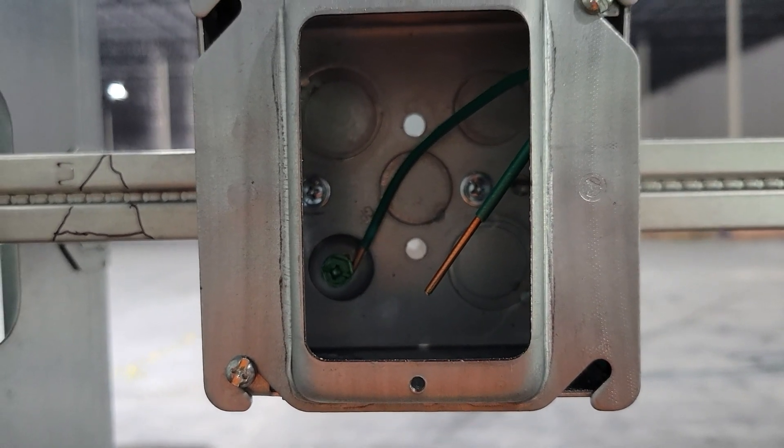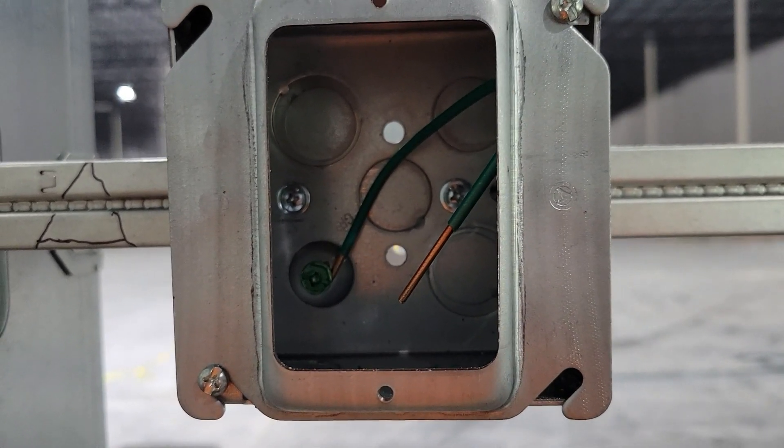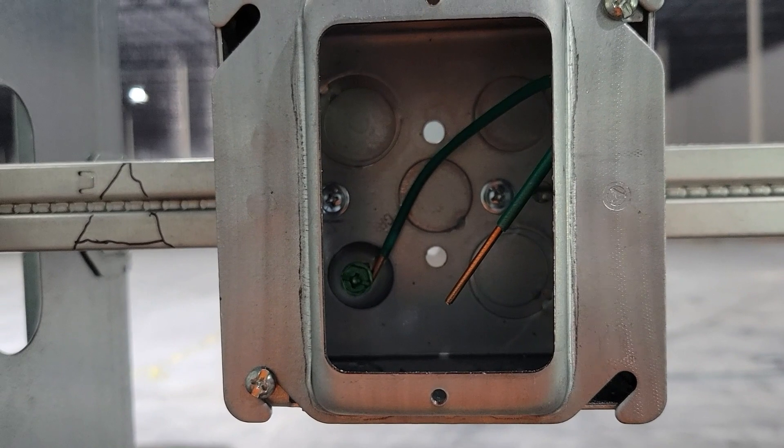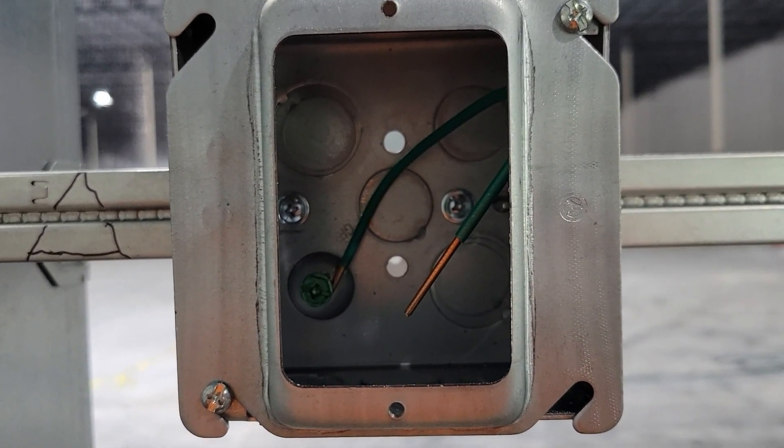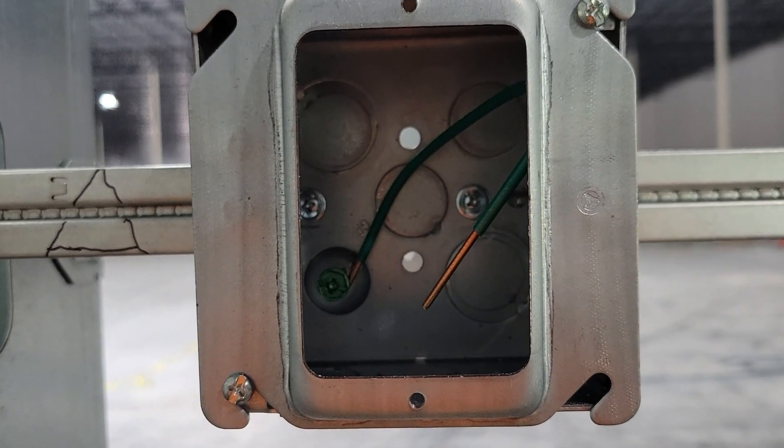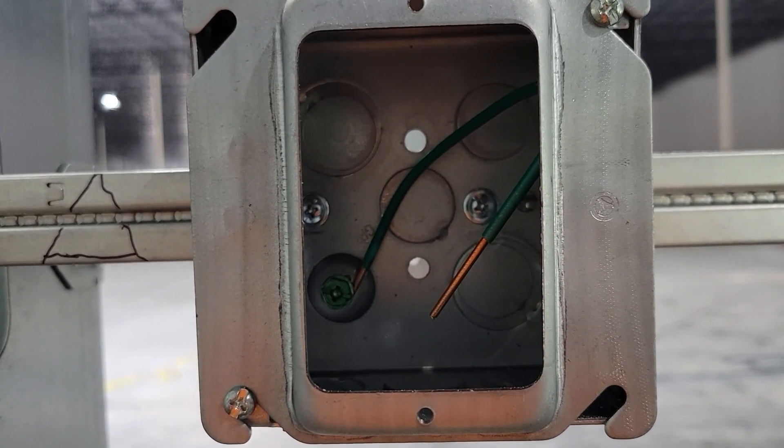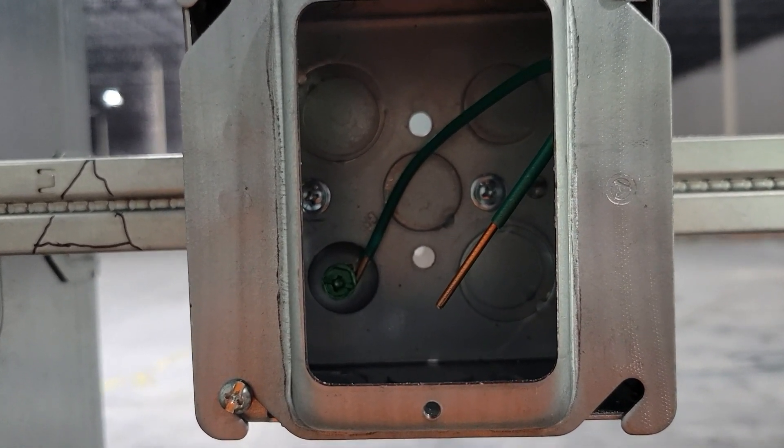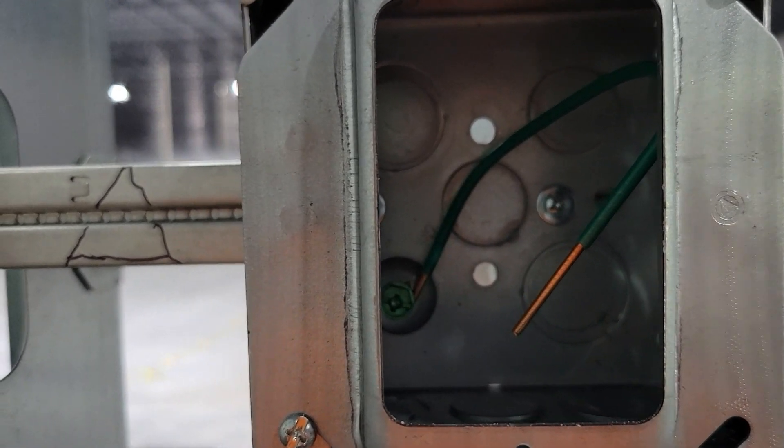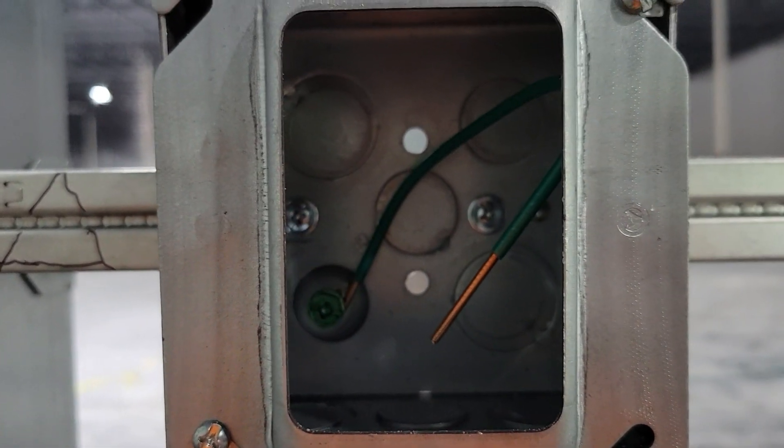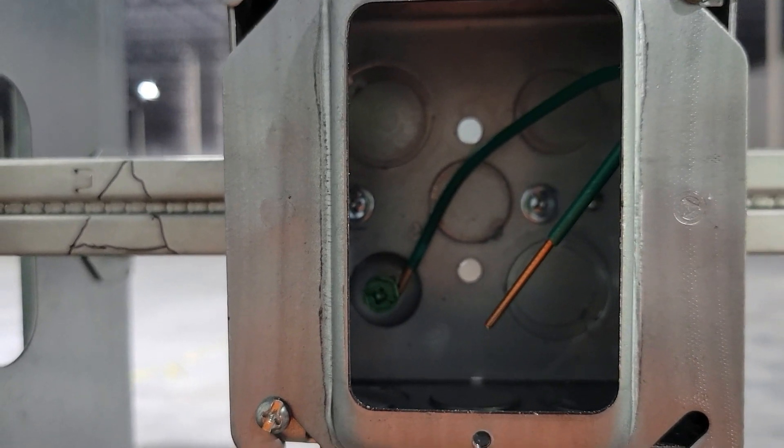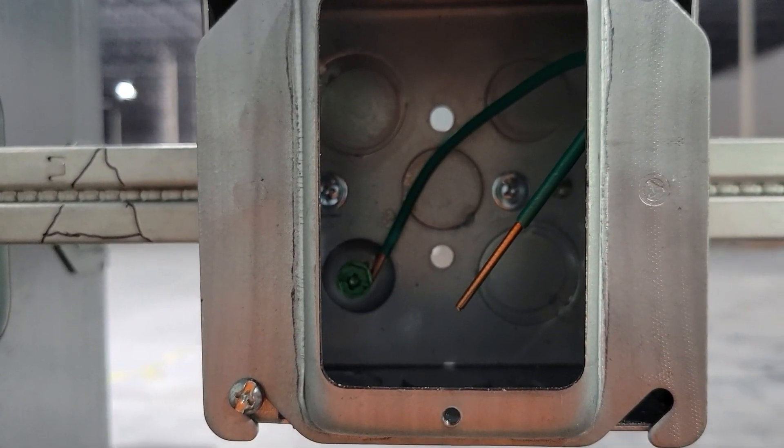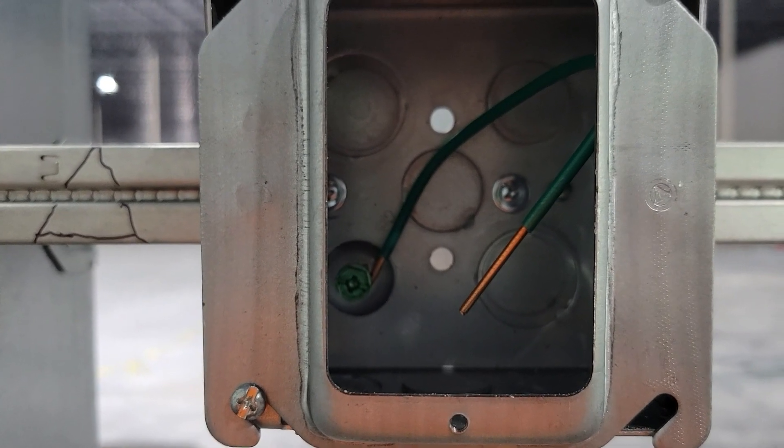It is required. Now there are certain stipulations to where you can get around that, but if you have a grounding conductor in your raceway, which means a green wire that is supplied to be the grounding conductor, then you are required to have a grounding screw installed with a copper jumper or aluminum jumper.